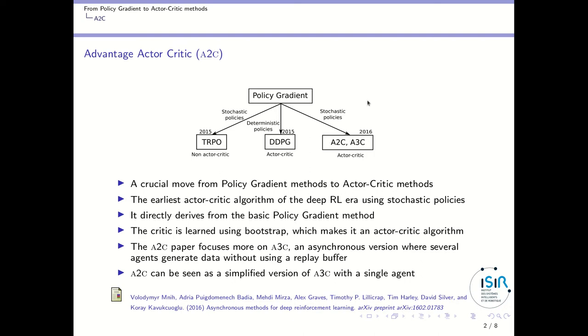As I will explain, this is the earliest actor-critic algorithm using stochastic policy from the deep reinforcement learning era. In practice, the first two algorithms using deep neural networks were TRPO, which uses stochastic policies but is not actor-critic, and DDPG, which is actor-critic but uses deterministic policy. This is why A2C is this crucial move from policy gradient to actor-critic, because it uses stochastic policies with the standard policy gradient approach and then adds actor-critic mechanisms.